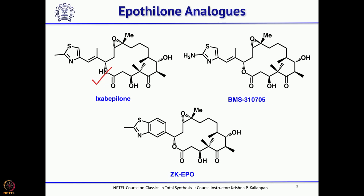You can see the major difference between the natural product Epothilone B and this analog: instead of a lactone, it is a lactam. If you look carefully at Epothilone, it is a macrolactone having an epoxide, an aldol, and a ketone — you can call it another aldol. Both sides have aldol and a lactone, whereas in this analog it is a lactam.